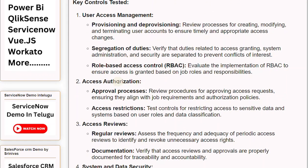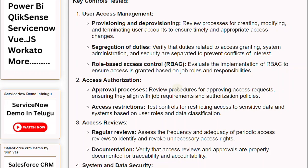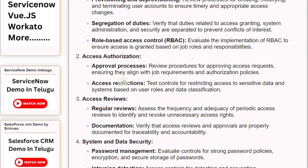Number 2: Access authorization — approval processes. Review procedures for approving access requests, ensuring they align with job requirements and authorization policies. Access restrictions: test controls for restricting access to sensitive data and systems based on user roles and data classification.